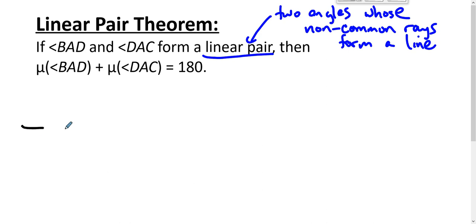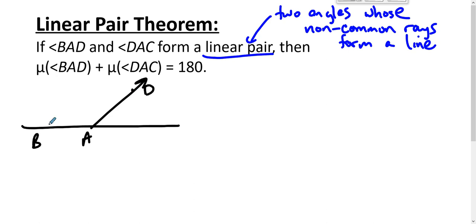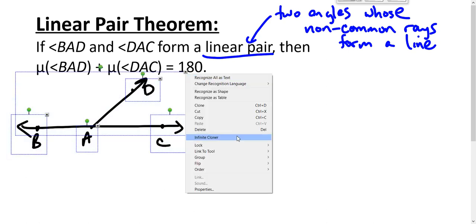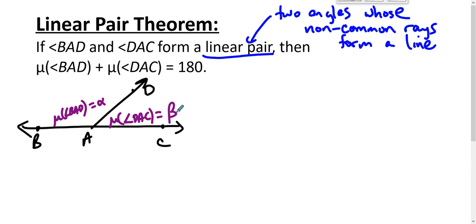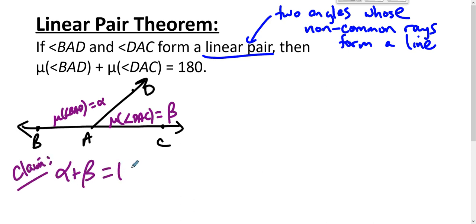Let's look at the scenario. We have that angles BAD and DAC form a linear pair, and we get the familiar result from high school that the sum of those two angle measures is 180. Let's say that the measure of angle BAD is some number alpha, and the measure of angle DAC is some number beta.